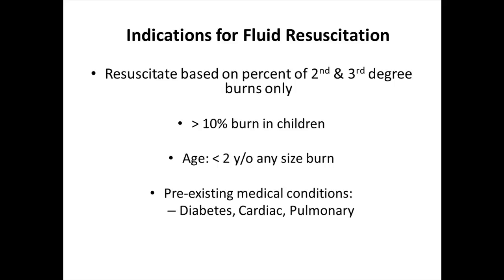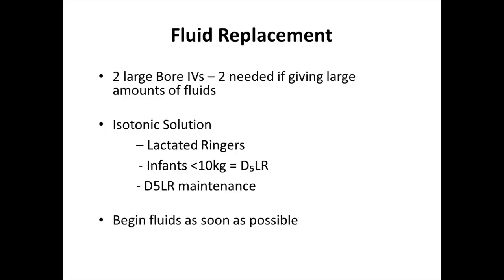The indications for fluid resuscitation are for children who have greater than a 10% burn, a child under two years of age with any size burn, and for children who have preexisting medical conditions such as diabetes, cardiac disease, or pulmonary problems. Also, resuscitation is based on the percentage of second and third degree burns only. To start fluid replacement, insert two large-bore IV catheters, or one if giving a smaller amount of fluid. Hang an isotonic solution — Ringer's lactate is the fluid of choice by most healthcare providers. Infants under 10 kilograms should receive D5 and lactated Ringer's, and the maintenance fluids given will also be D5 and lactated Ringer's. It is important to begin fluids as soon as possible.